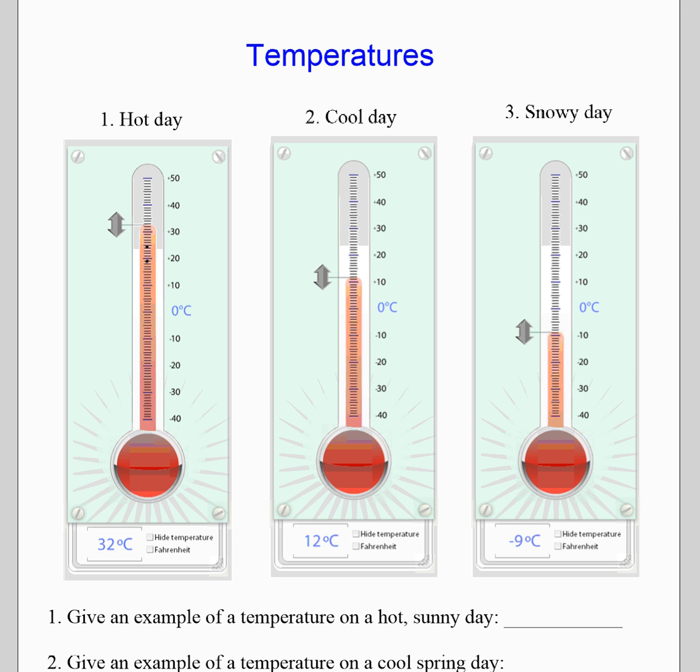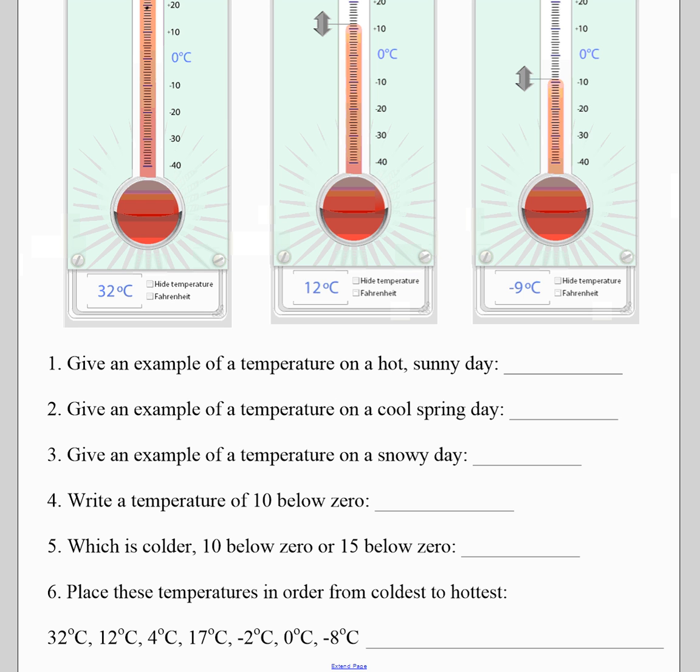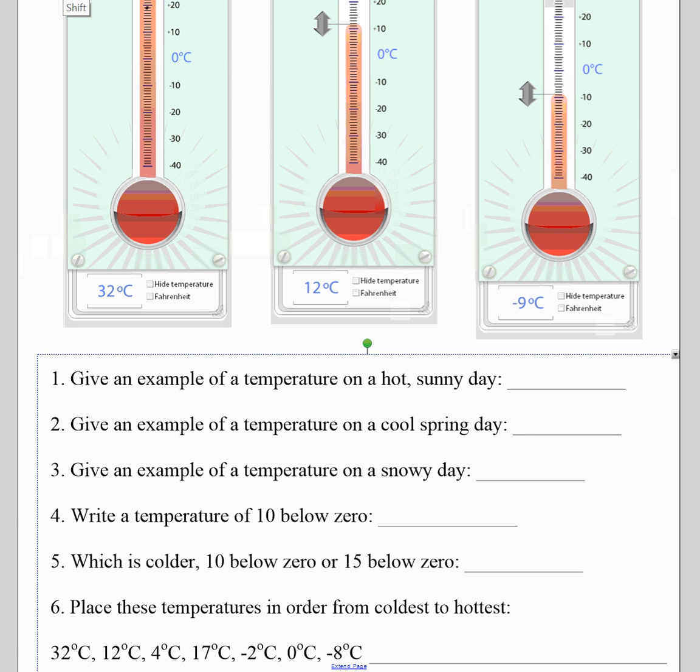So those are some examples of integers. An example of a temperature on a hot sunny day is 32 degrees Celsius. Cool spring day, 12 degrees Celsius. A cold snowy day, maybe negative nine degrees Celsius. How would we say 10 degrees below zero? We might say negative 10 degrees Celsius.